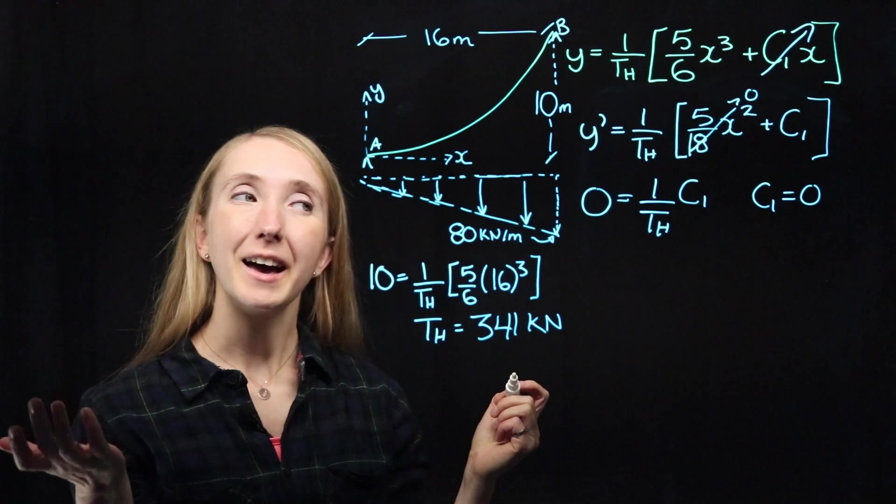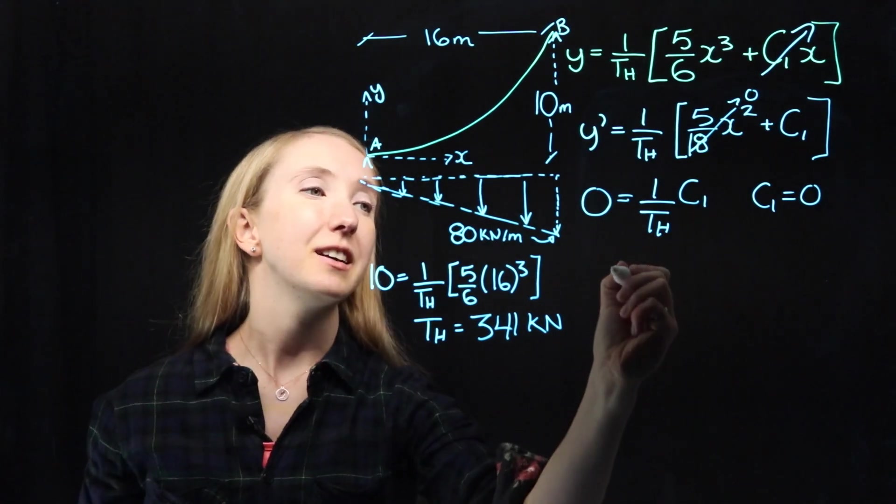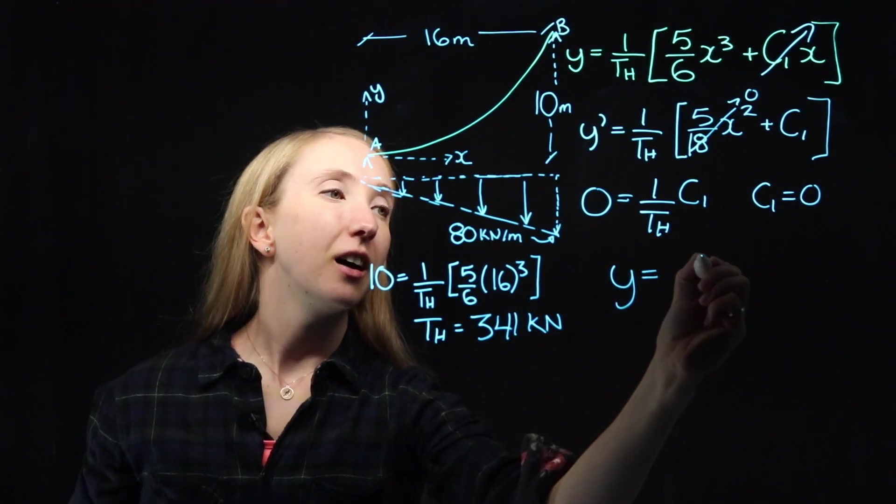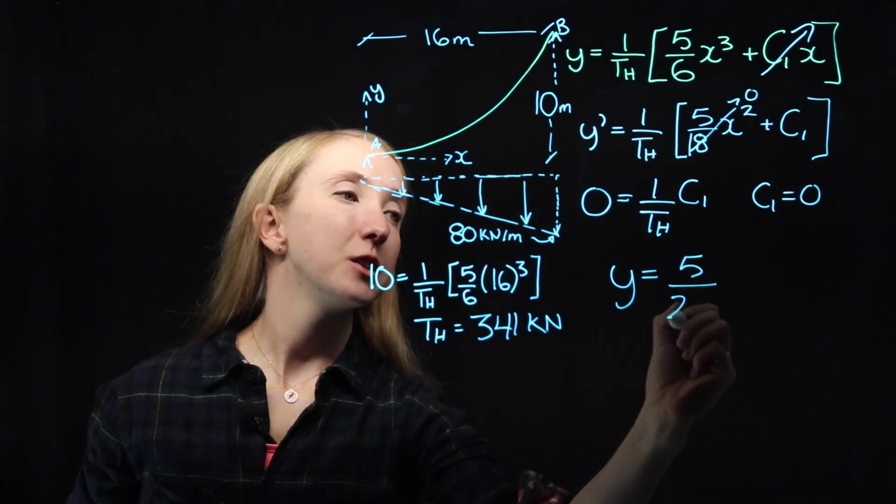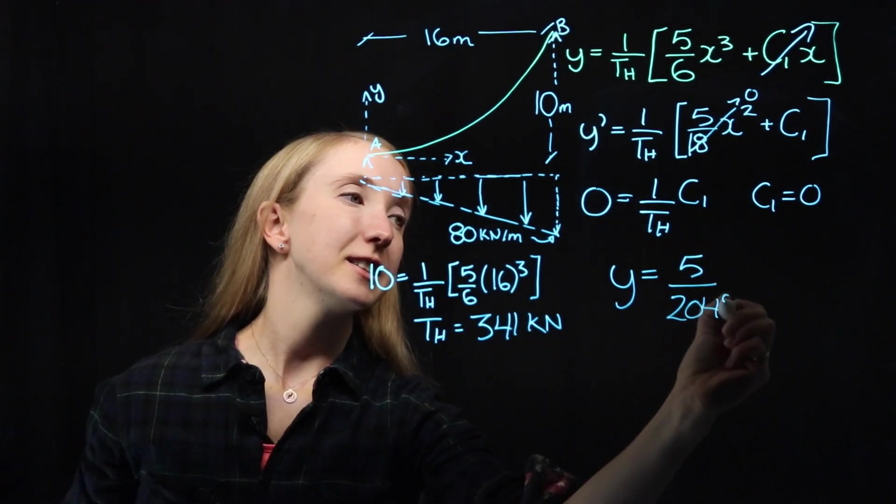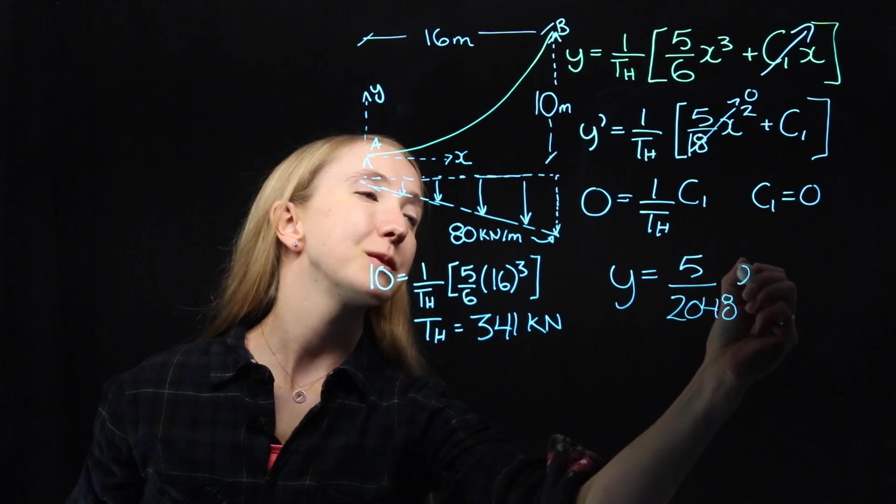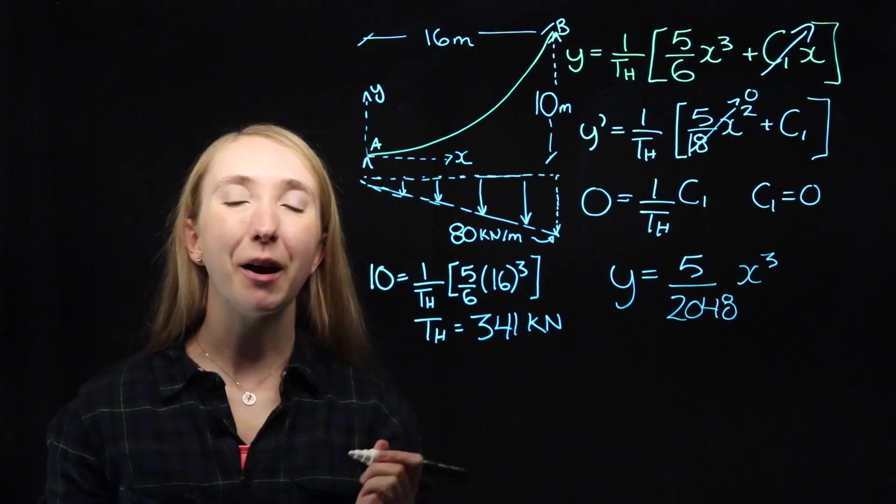Now all that's left to do is take this TH and put it into this equation. Once you do that and simplify, you'll get a nice final shape equation of 5 over 2048 times x to the power of 3.